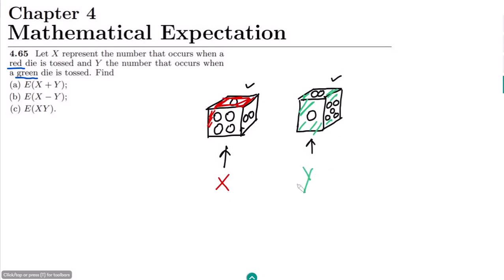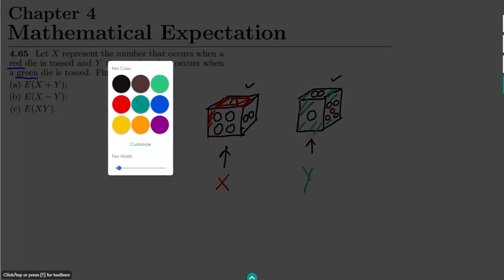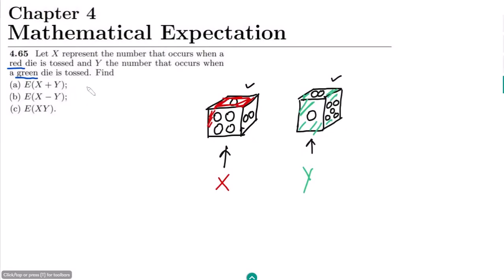So we have X and Y, and both of these are basically independent of each other. Therefore E of X plus Y will be equal to E of X plus E of Y, because these two are independent of each other.